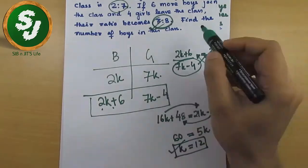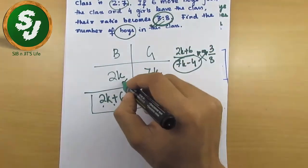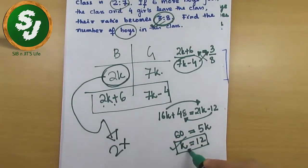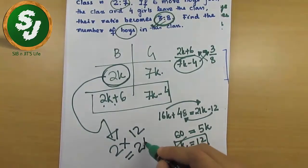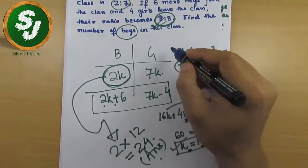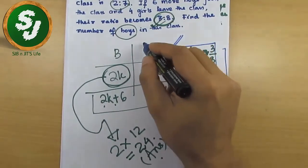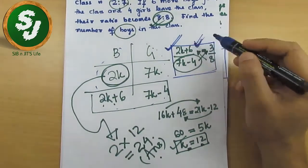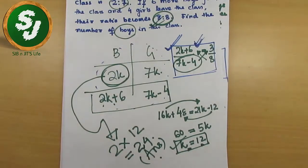The question asks for the number of boys in the class. Number of boys = 2k = 2 × 12 = 24. So the answer is 24. In the next videos we will solve more questions from conditional ratio. Practice writing equations directly from the start — there is no need to write every step. Re-watch if you have any doubt. Good luck, see you in the next video.